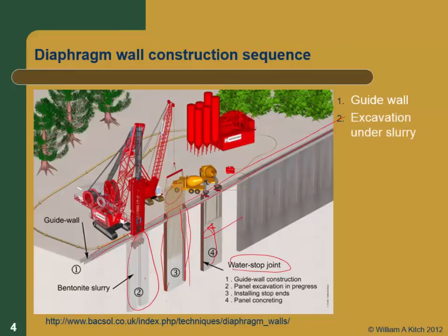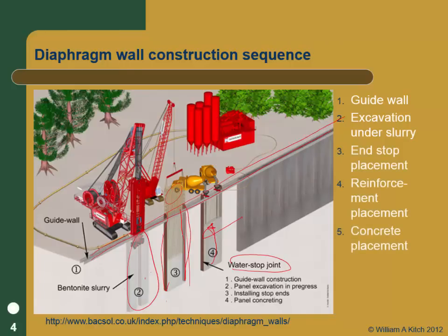So the basic sequence is: put in the guide wall, excavate under slurry, place the end stops, place the reinforcement, tremie the concrete in, and then go on and do the next panel.